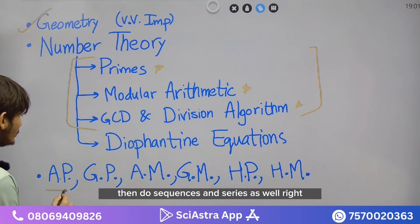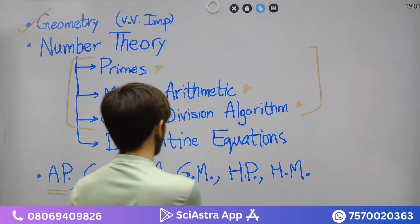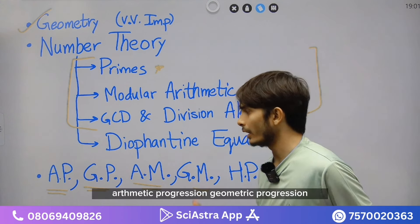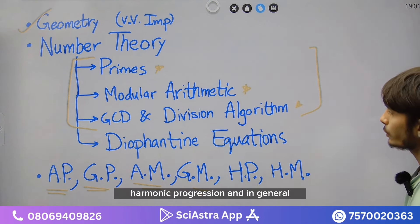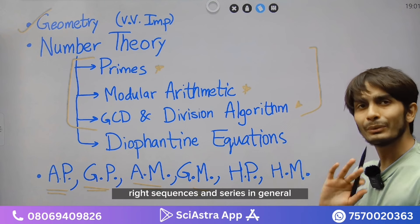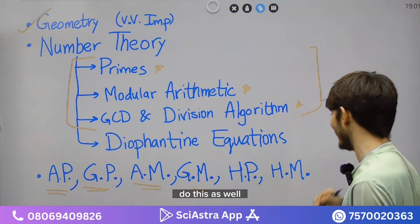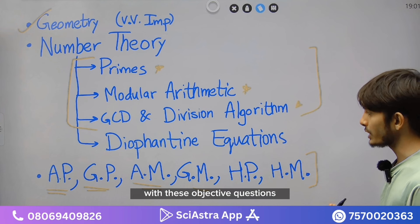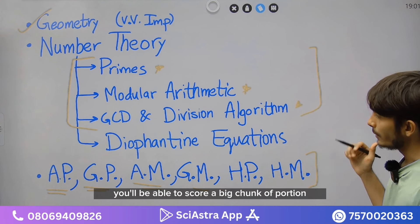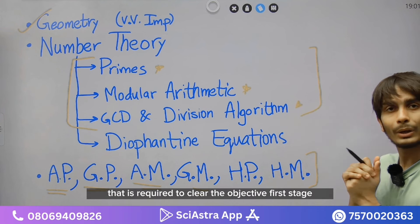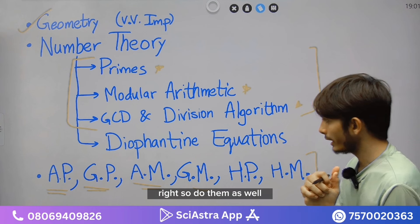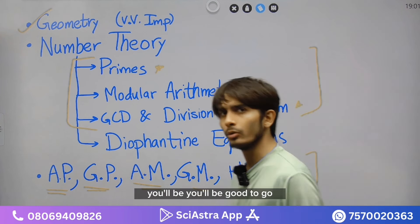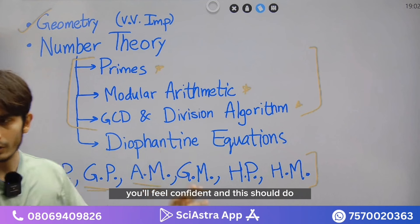Then do sequences and series — AM-GM inequality, HM inequality, AP, GP, and harmonic progression, and sequences and series in general. You'll have a lot of objective questions from here. With these objective questions you'll be able to score a big chunk of marks required to clear the objective first stage. So do them as well, and with these topics you'll be good to go — you'll feel safe, secure, and confident.